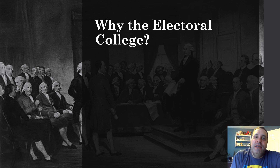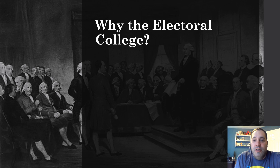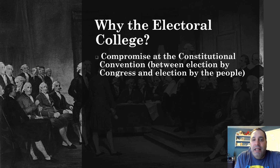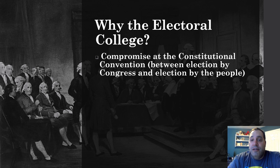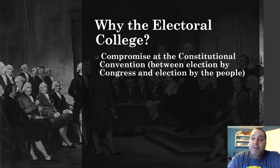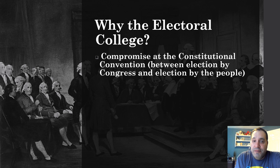So why did the framers of the Constitution set up the Electoral College? Well, it was mainly the result of a compromise at the Constitutional Convention. There were some delegates who thought that the president should be chosen by Congress. Others thought the president should be chosen by a direct vote of the people. Ultimately, they decided to go with this compromise: the people choose electors, and then the electors choose the president.